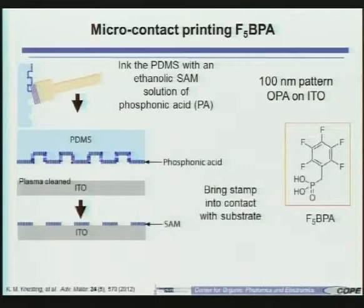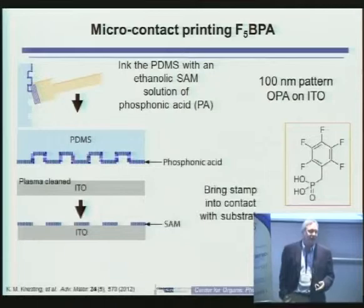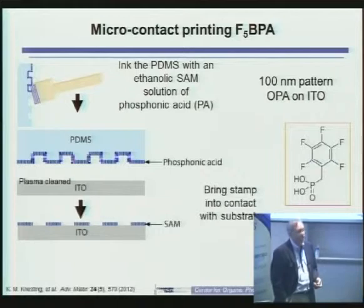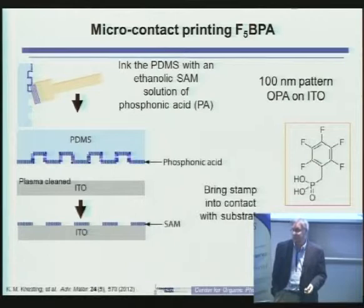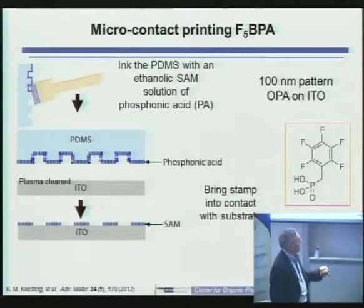This represents a collaboration between Georgia Tech and the University of Washington, showing that there are many different ways to deposit SAMs on surfaces. Our original studies involved dip coating techniques. More recently, in collaboration with Sam Graham's group, they've shown you can spray coat phosphonic acids onto surfaces very quickly and efficiently and then rinse off the excess. Another example involves inking a stamp and microcontact printing the phosphonic acids on a surface.